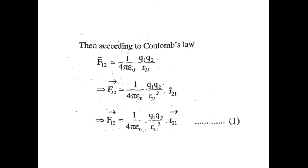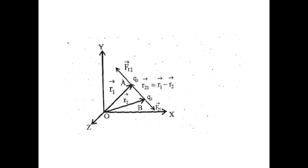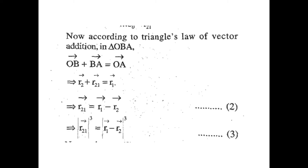Now, according to the triangle law of vector addition applied to triangle OBA: OB-vector + BA-vector = OA-vector, which gives r2-vector + r21-vector = r1-vector. Therefore, r21-vector = r1-vector − r2-vector. This is Equation 2. The magnitude |r21| = |r1-vector − r2-vector|. This is Equation 3.